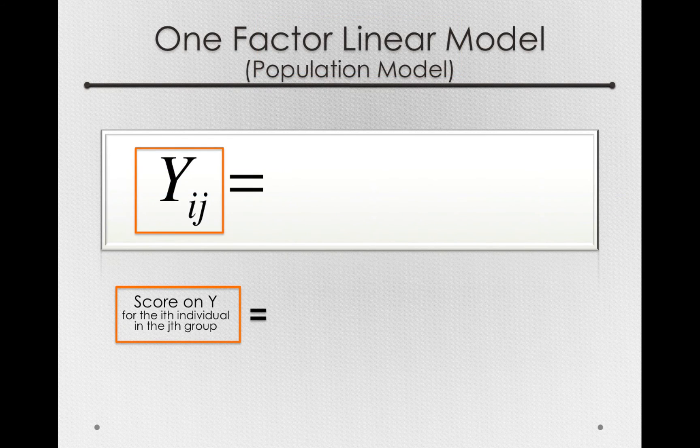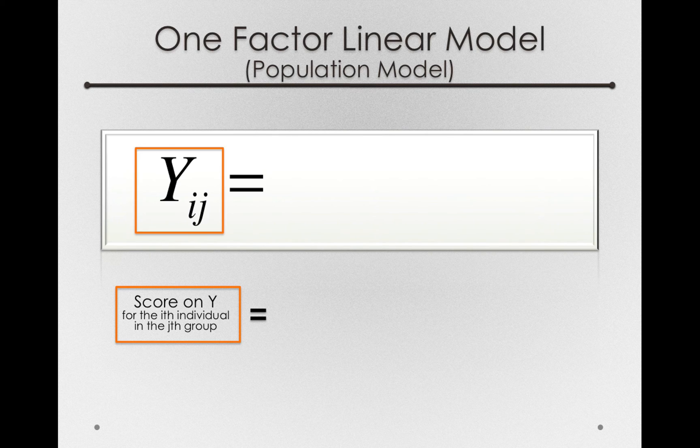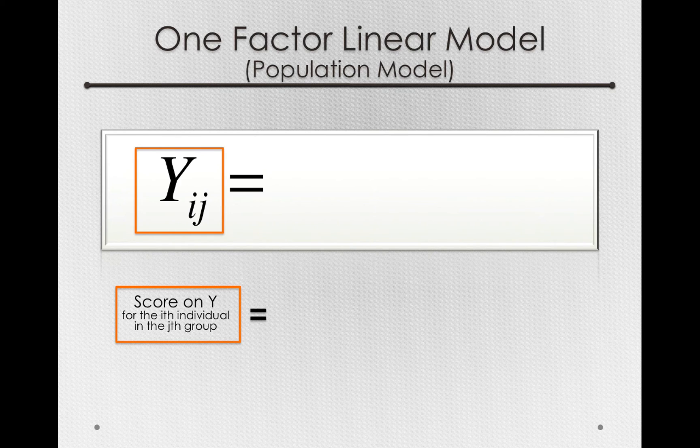Alright, so we have the individual score. But we're trying to predict this on the basis of, remember, an overall average plus an offset plus some individual error. So let's look at the overall average.